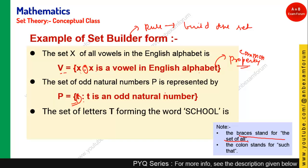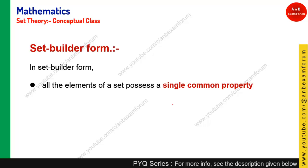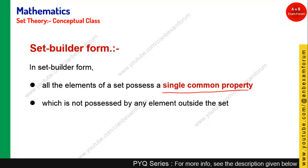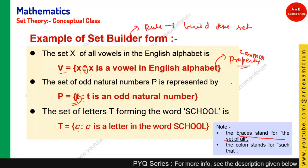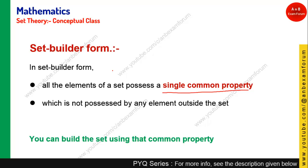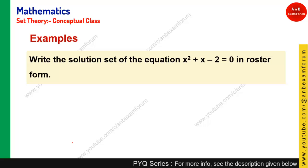Similarly, the set of all letters in the word 'school' in set builder form: {c : c is a letter in the word school}. Here the elements are not listed, but with that rule you can derive those elements. In set builder form, there is a rule, and all elements of the set possess a single common property which is not possessed by any element outside the set. Based on this common property you can build the set.